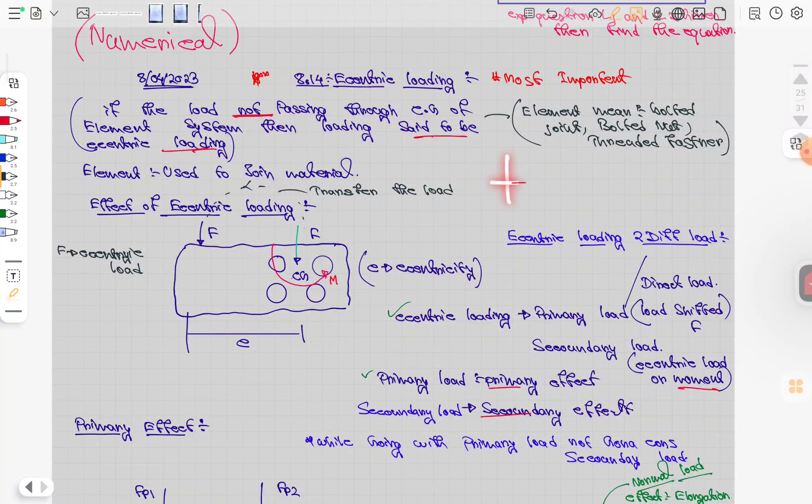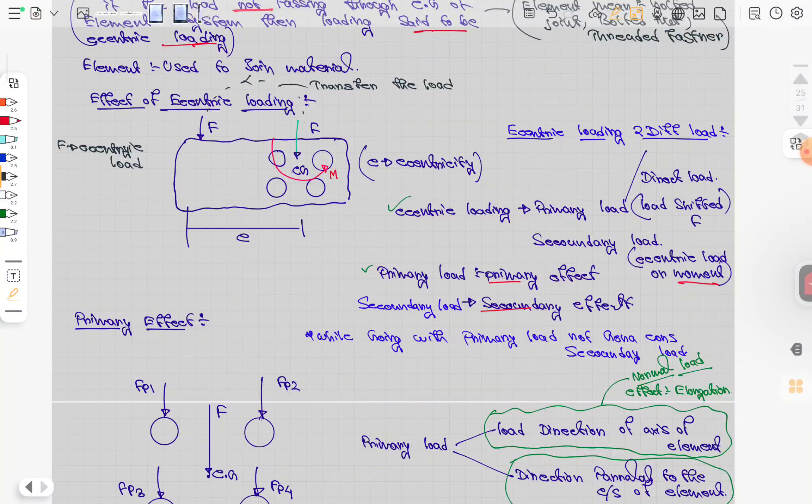What does eccentric mean? This is the center of gravity (CG) where the CG passes, and some load is applied at some distance from there. That is called eccentric because it's not in the center - there is a distance between them. It's used in joint transformation.